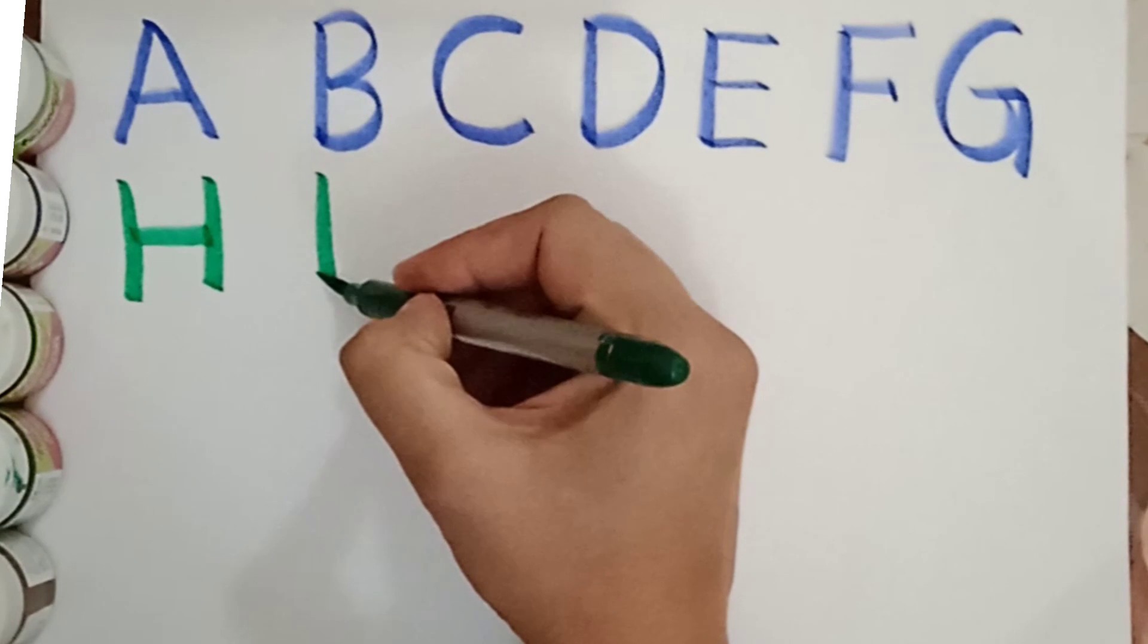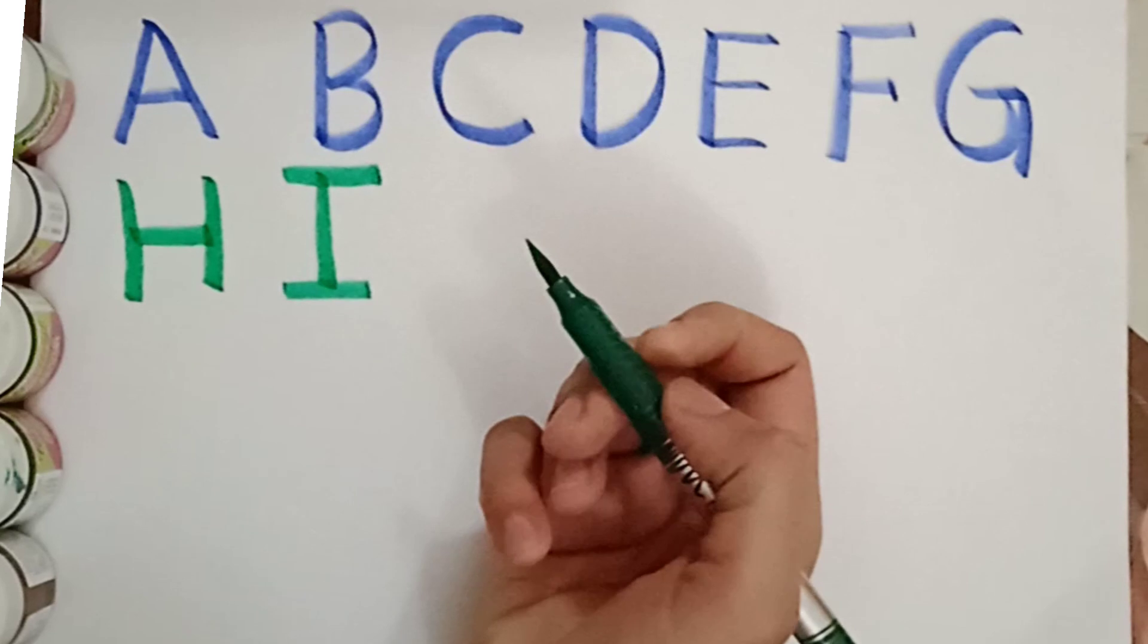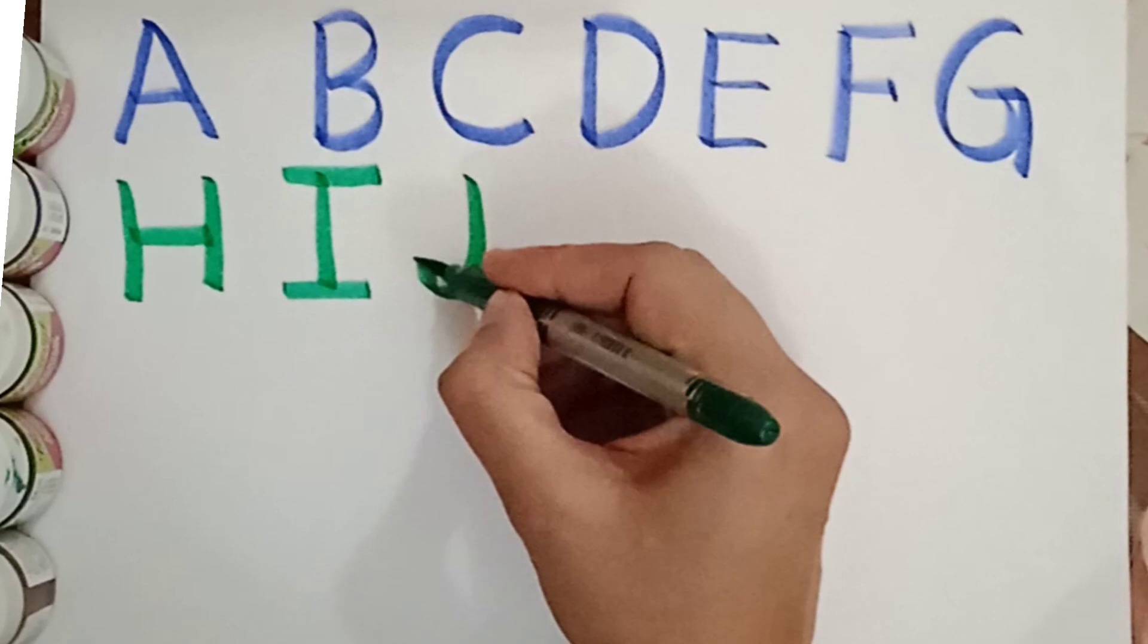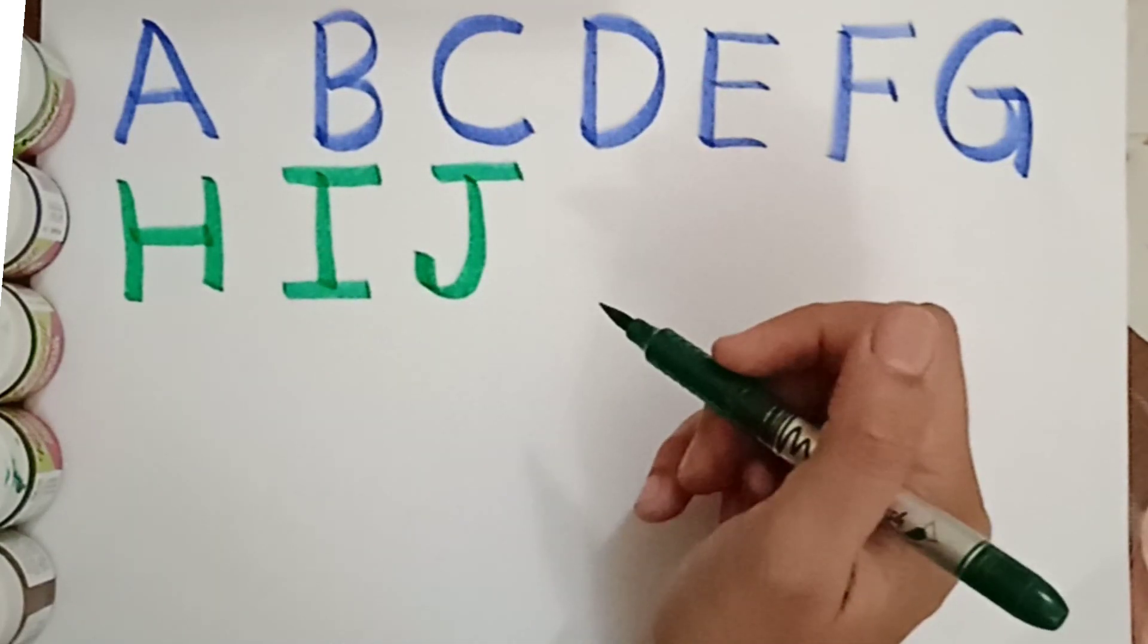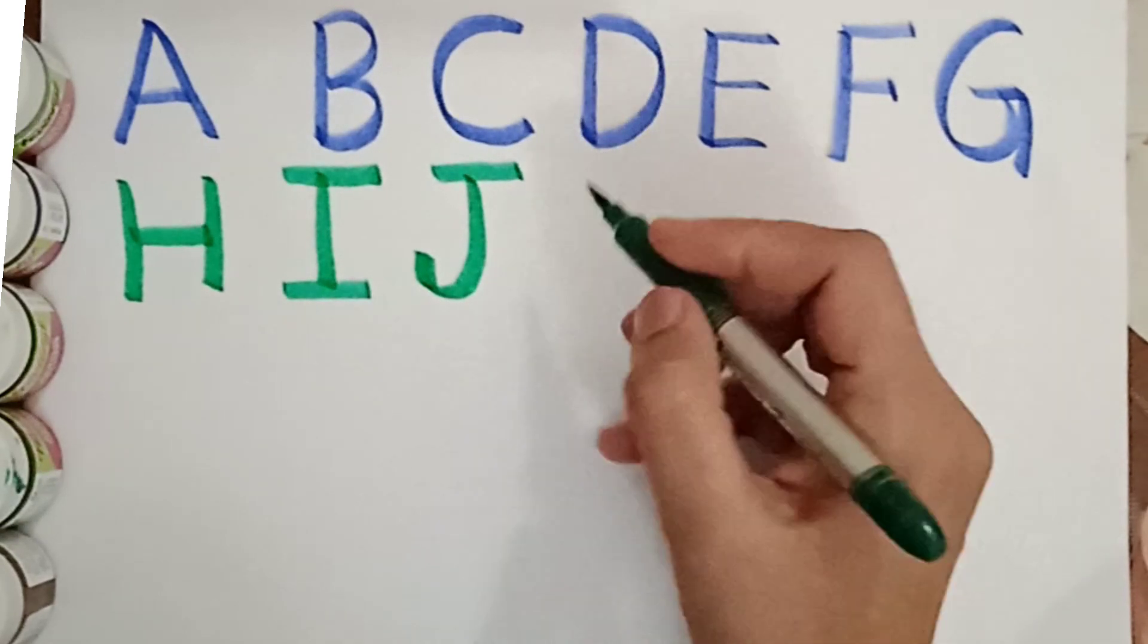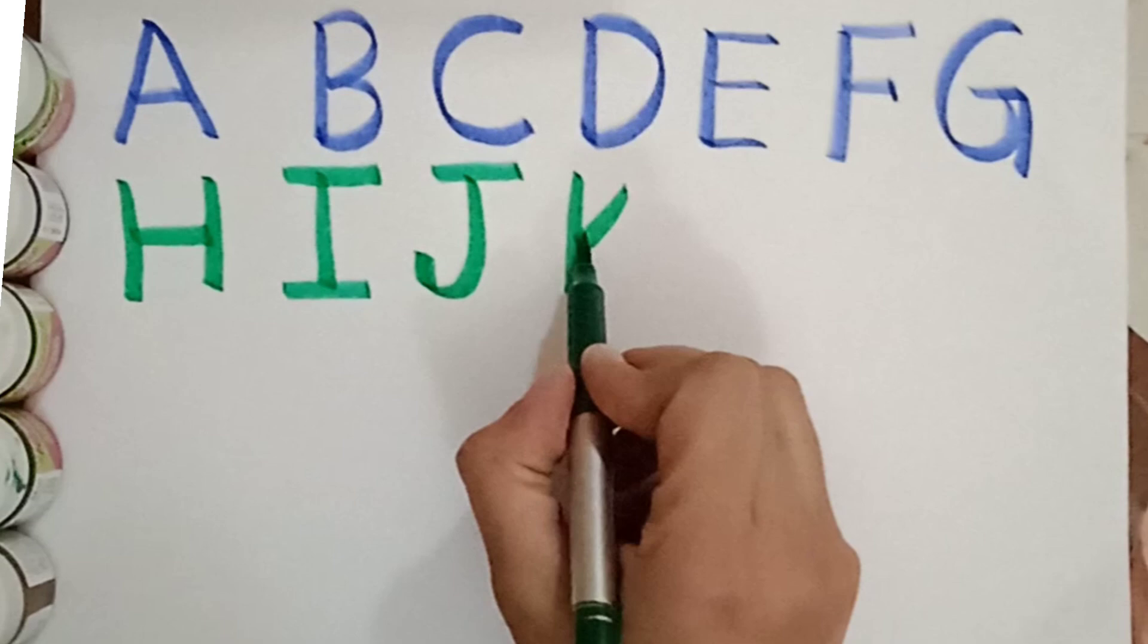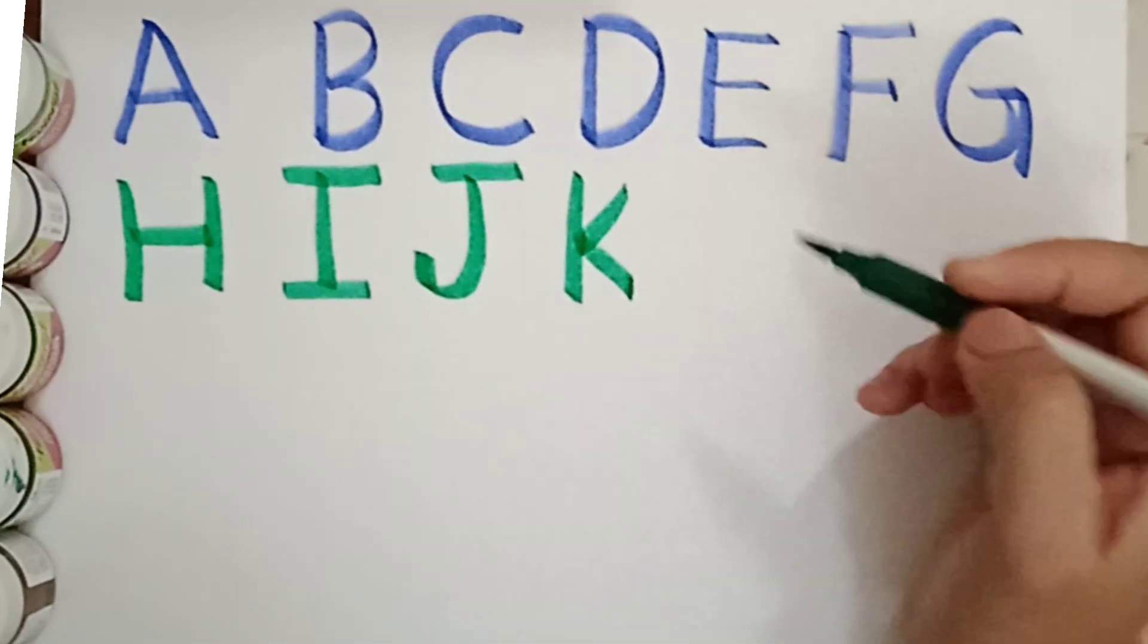Next letter is I. I is for ice cream. I for ice cream. J. J for juice. J for juice. What comes after J? K. K for kite. K for kite.